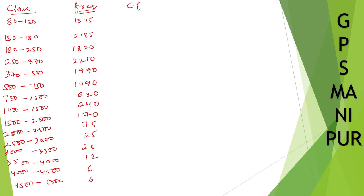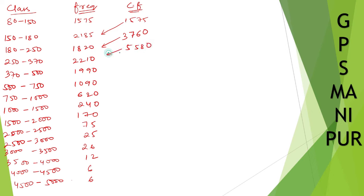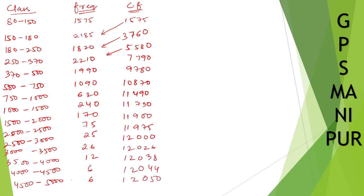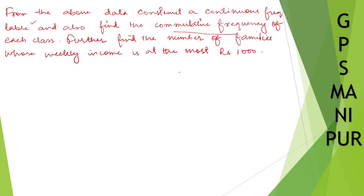The cumulative frequency (CF): the first one is 1575. The next is 1575 plus 2185, which gives 3760. Then 3760 plus 1820 gives 5580. We keep adding each class frequency to the previous cumulative frequency. I have completed the cumulative frequency table for all classes.